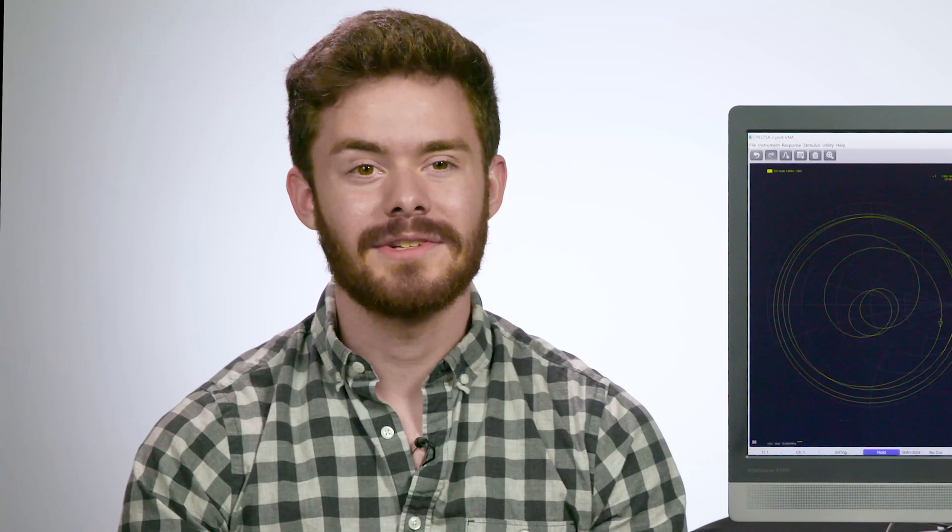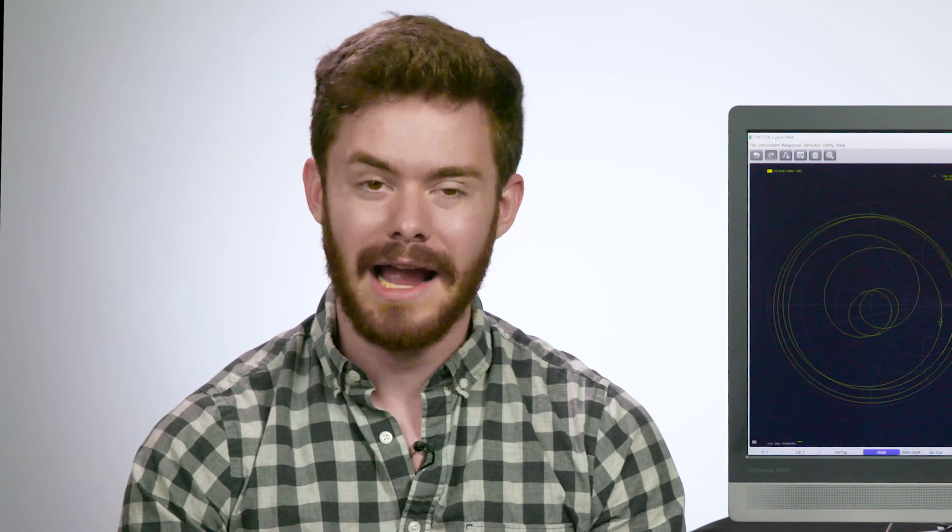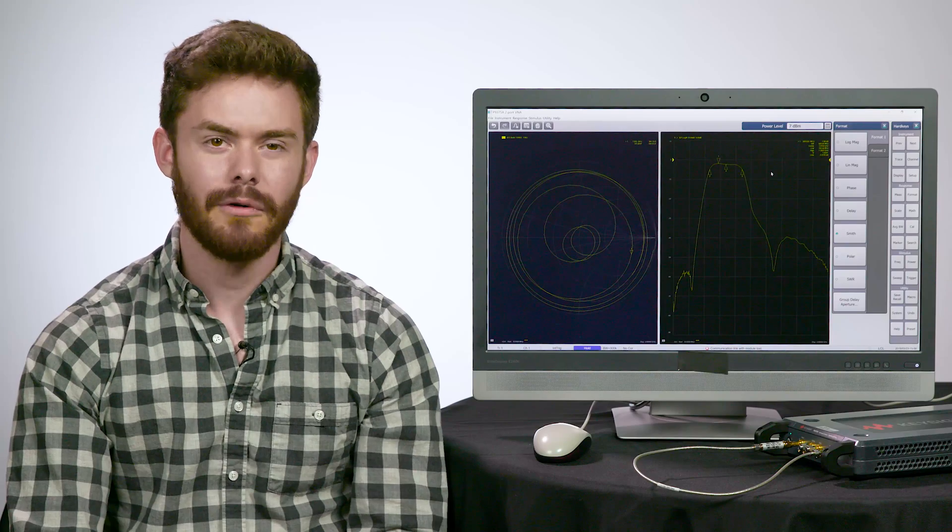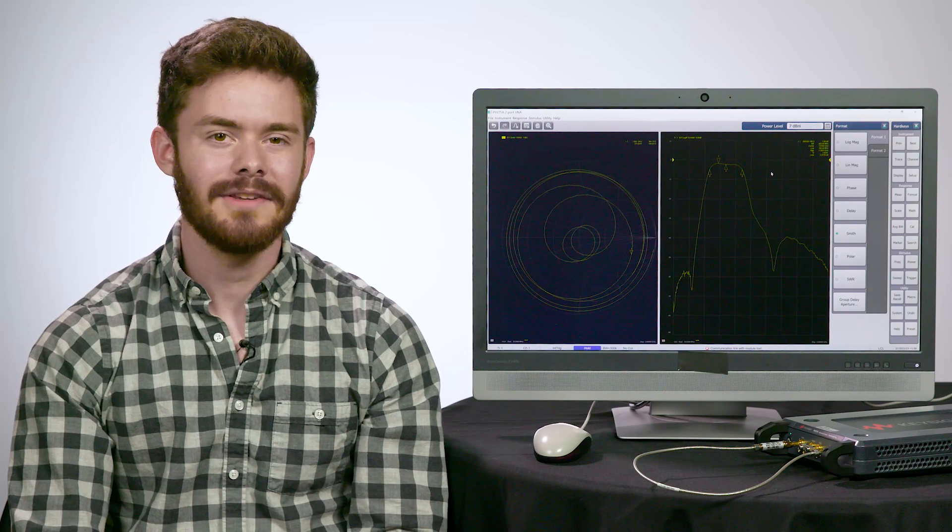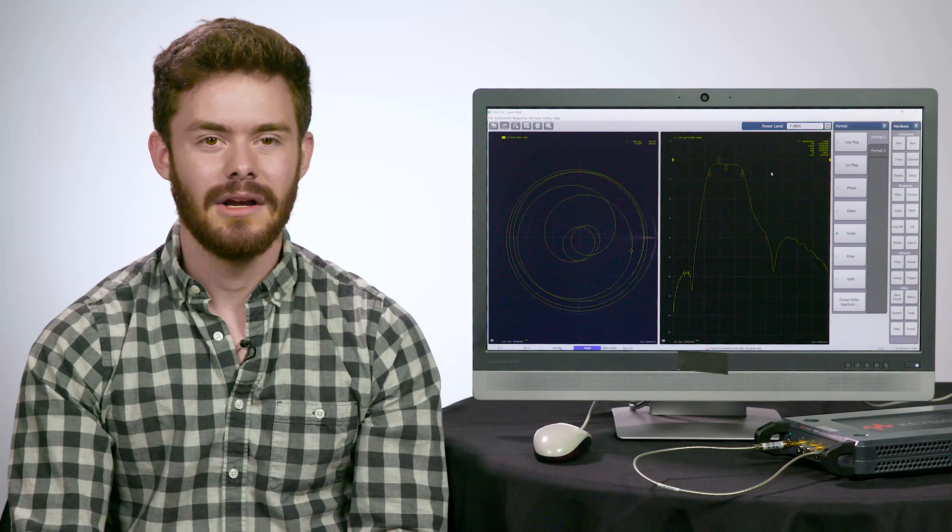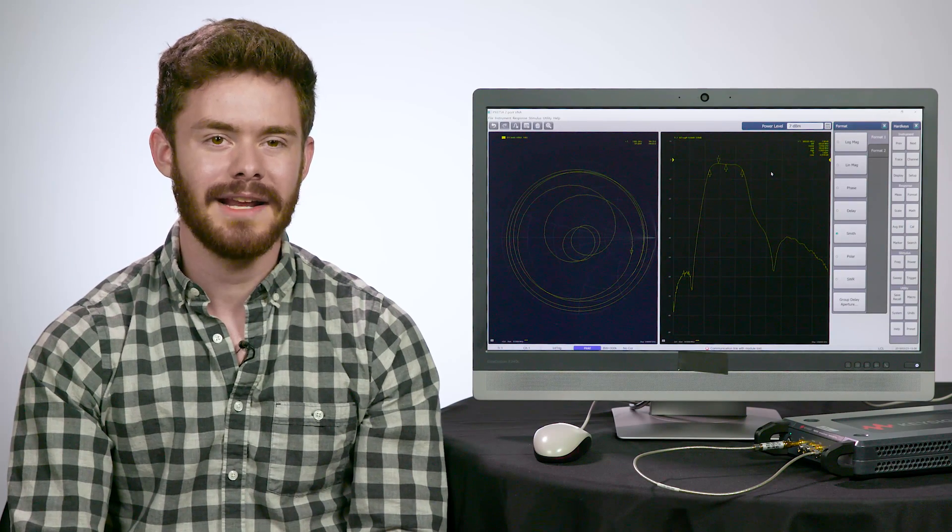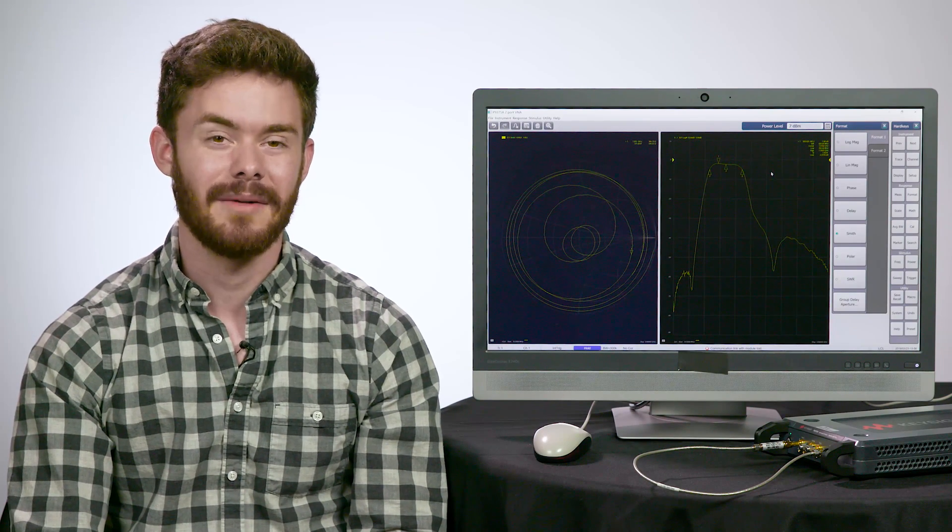Once the firmware is installed, it will prompt you to restart your computer. After the restart, you'll see an icon for the software on your desktop. Before you open the software, plug in the USB cable of the instrument into your PC. Once you do this, open the new VNA software by double-clicking the desktop icon.